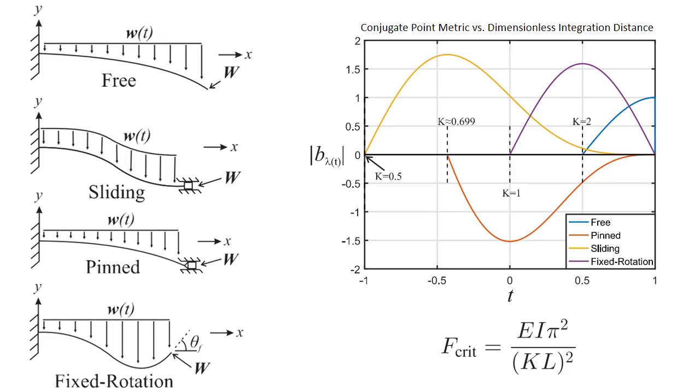The results for a single rod agree with the Euler critical buckling loads for columns with various end conditions in the special case of a straight configuration, but our numerical approach is more general since it also accounts for large deformations.